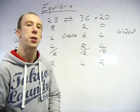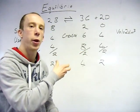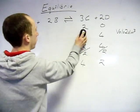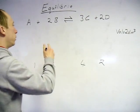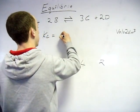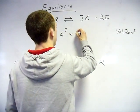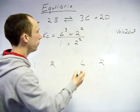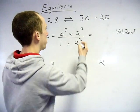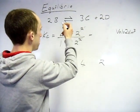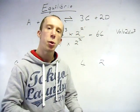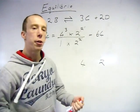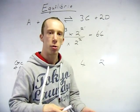So there we have our concentrations. We put them into that Kc expression written up earlier. Working through the calculation — cancelling terms — the value of Kc comes out as 64. You do need to work out the units for Kc as well.